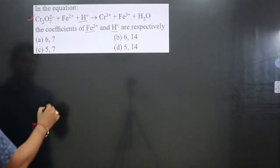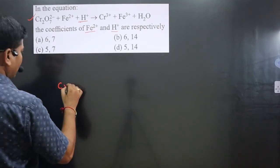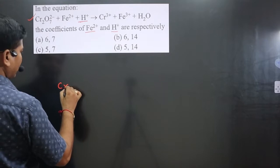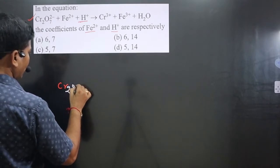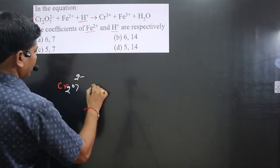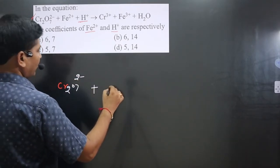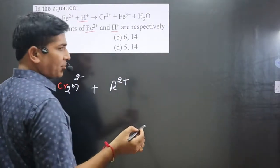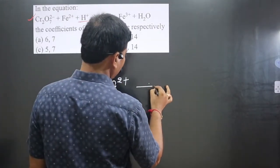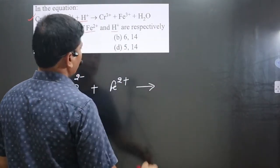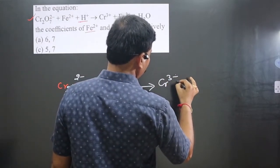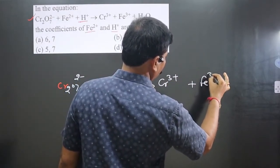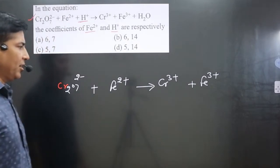Let's write down the equation. We have Cr2O7 2- and then Fe2+. Since H+ is part of the medium, we can balance hydrogen later on. On the product side, we get Cr3+ and Fe3+. This is the actual equation given.